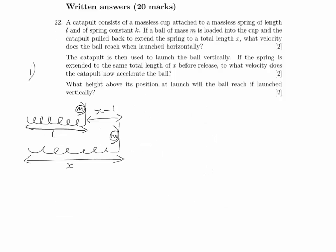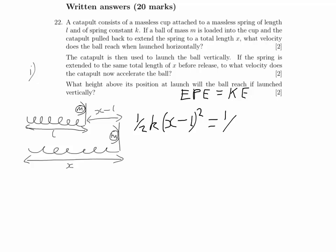I've just moved the diagram to the side. To find the velocity, we're going to find the elastic potential energy stored in this spring and equate it to the kinetic energy to find the velocity that way. The elastic potential energy is given by half k delta x squared. It's important to note that delta x here isn't the x from our diagram — it refers to the extension, which in our case is x minus L.